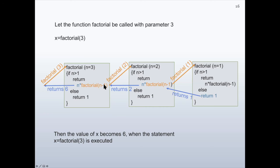The return value 2 replaces factorial(2) in the n=3 call. Since n is 3, 3 multiplied by 2 results in 6. The function returns 6 at this point, and then the value of x becomes 6 when the statement x = factorial(3) is executed.